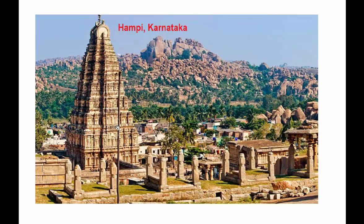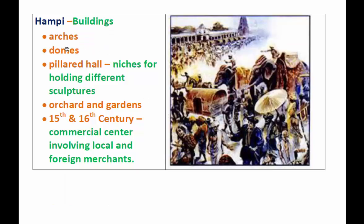As far as the buildings of Hampi are concerned, they have beautiful arches, domes, and pillared halls. These pillared halls have niches for holding different sculptures. Niches are spaces on the wall for placing idols or deities — you'll also find these niches in some Hindu houses.